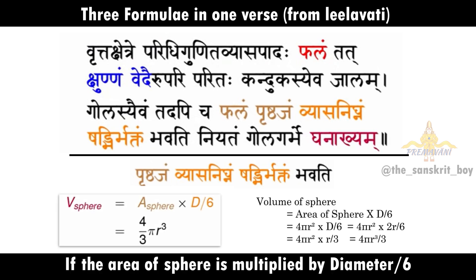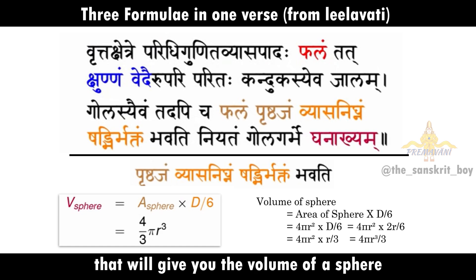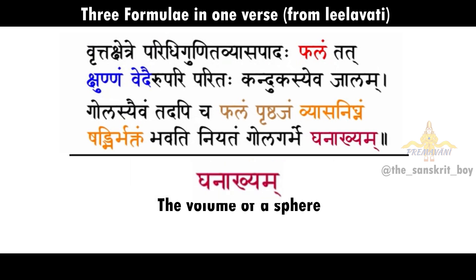If the area of the sphere is multiplied by diameter by 6, that will give you the volume of the sphere, i.e. ghanakhyam.